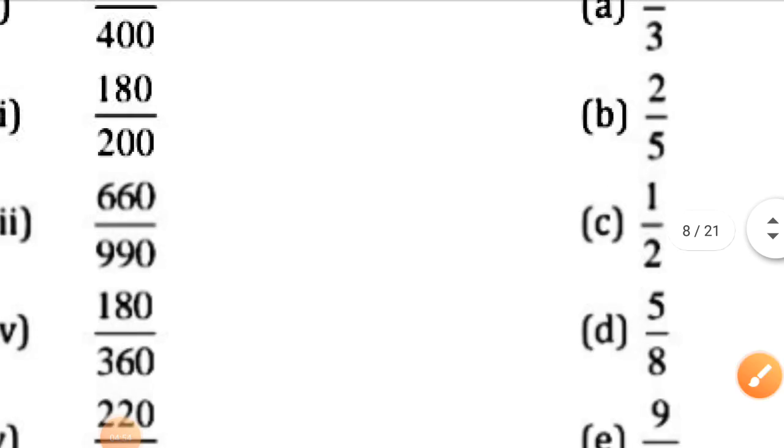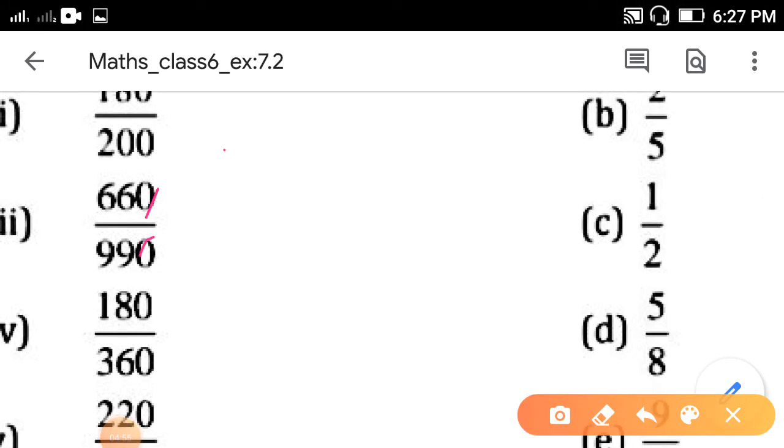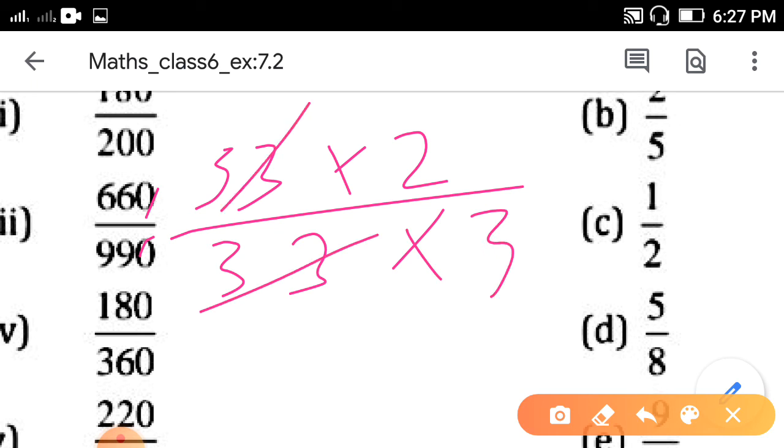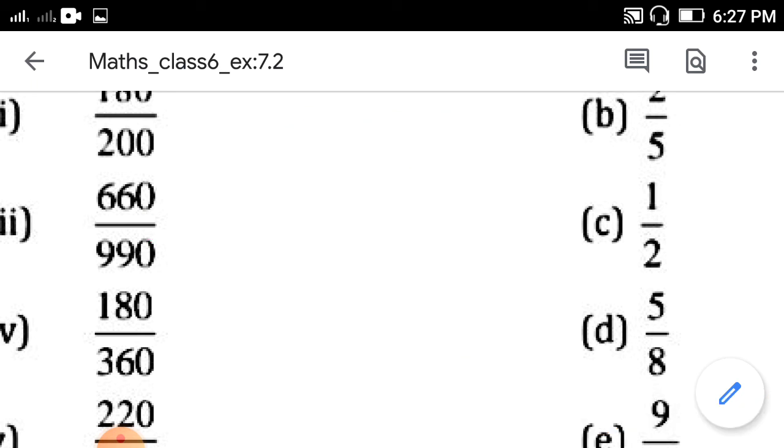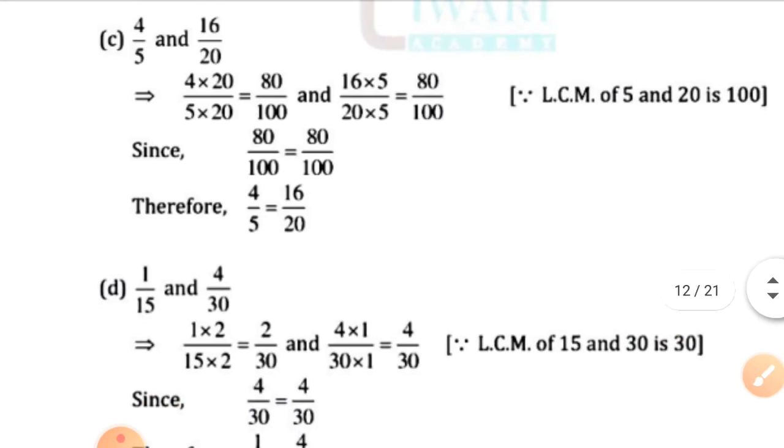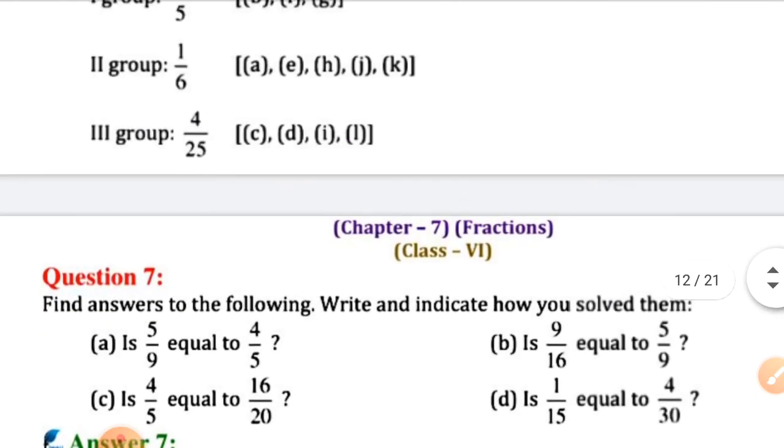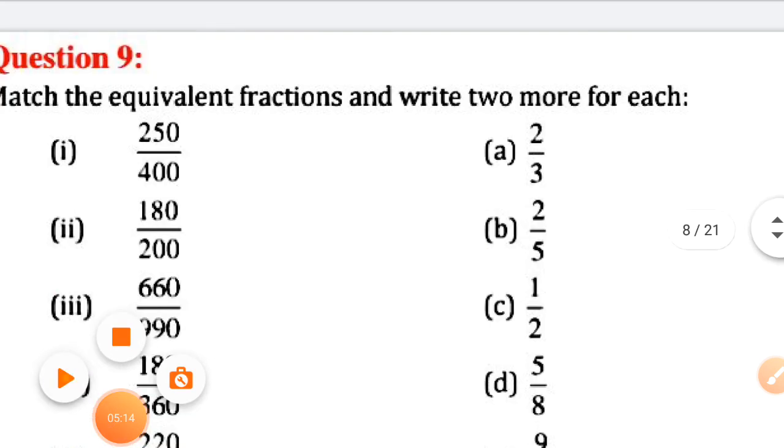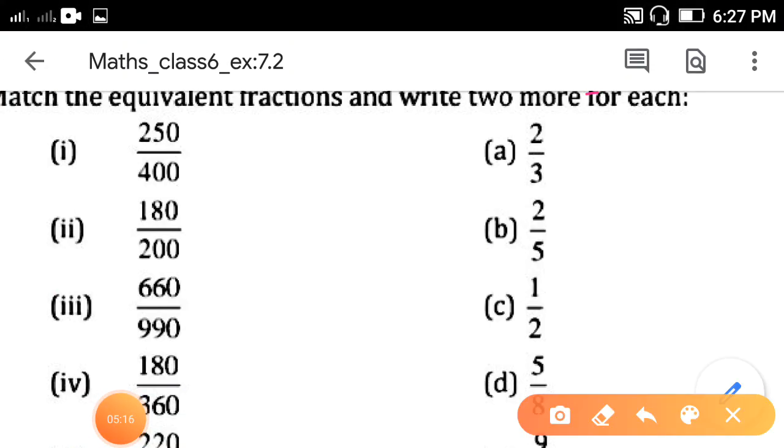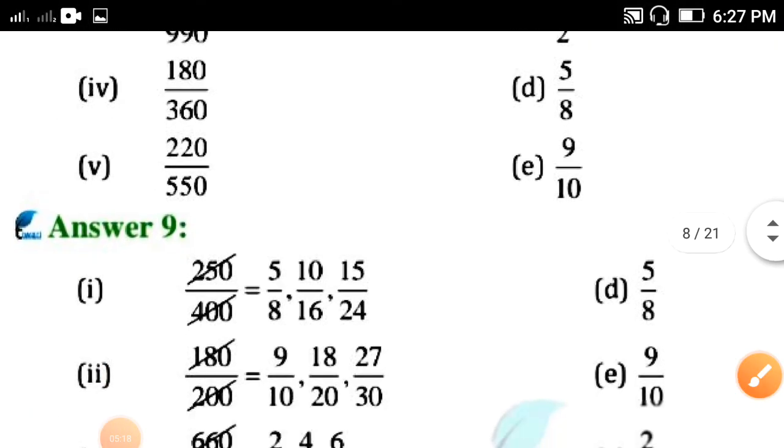Next, third one, zero, zero, cut, 33 times 2 and 33 times 3. So, 33, 33 cancel, here it remains 2 upon 3. 2 upon 3, yes, option A is the correct answer.